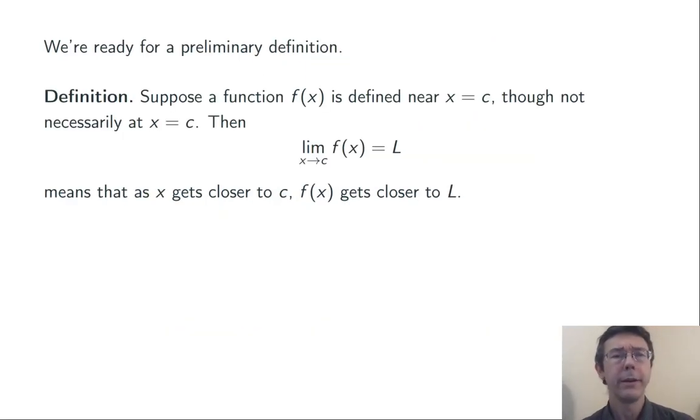We're ready for a preliminary definition. We have a function f that's defined near a value x equals c, though not necessarily at x equals c. We write, limit as x goes to c, f(x) equals L, to mean that as x gets closer to c, f(x) gets closer and closer to capital L.